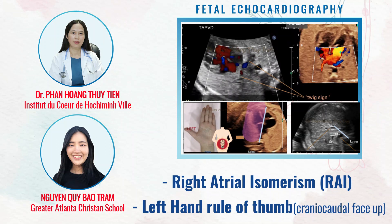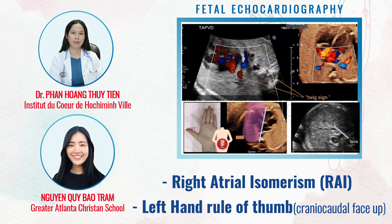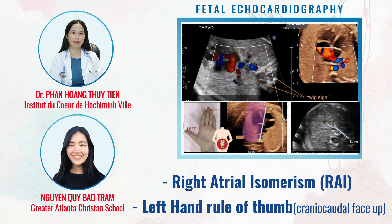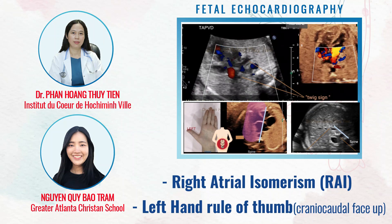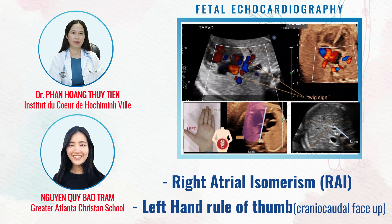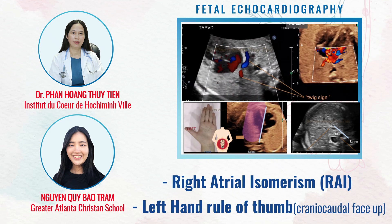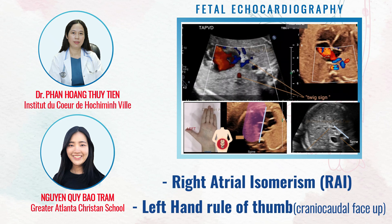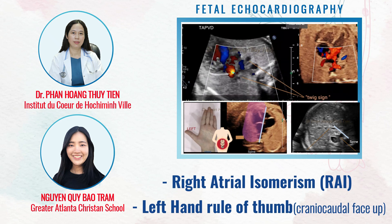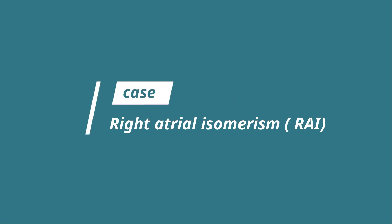RAI, or also called right atrial isomerism, is a situs ambiguous with bilateral right-handedness. There is often complex heart disease associated with this syndrome.